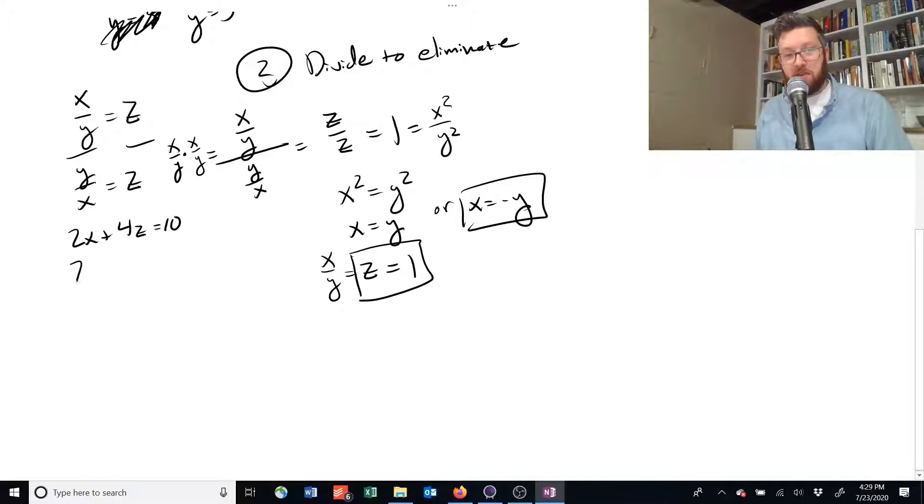We're going to use that over here. We have 2x plus 4 equals 10. And 2x, if we subtract 4 from each side, we get 6. So we get x equals 3. And since x is equal to y, we know that y must also be equal to 3.